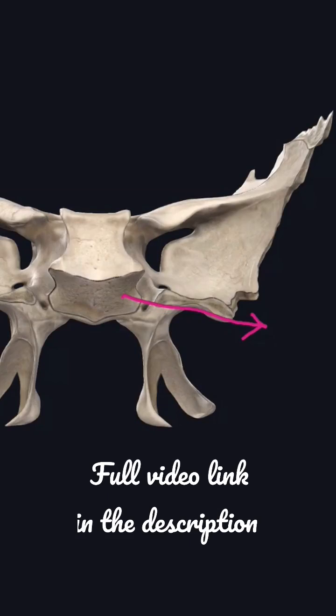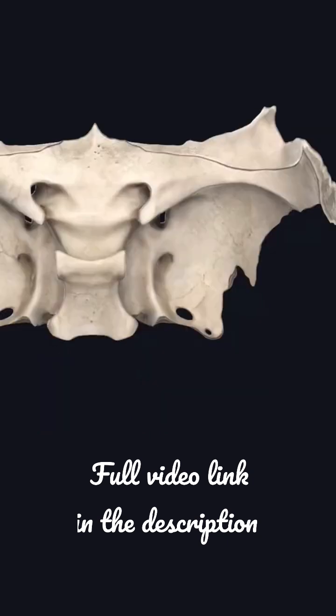This is the posterior surface of the dorsum sellae, becoming continuous with the basiocciput forming the clivus, upon which the upper part of the pons rests. The entire superior surface of the body of the sphenoid resembles a Turkish saddle, hence it is called the sella turcica.